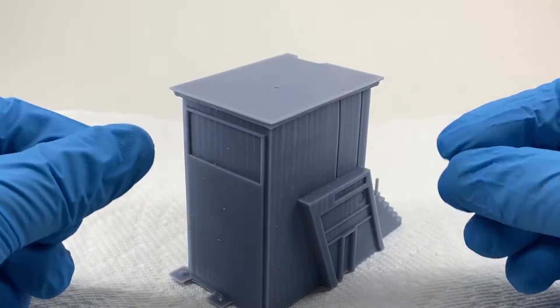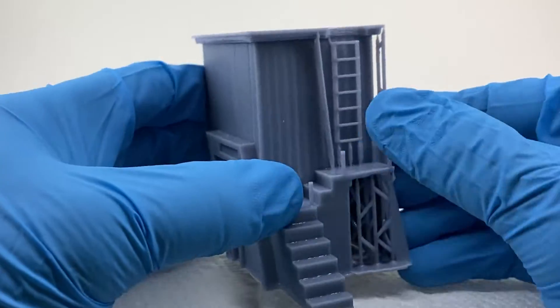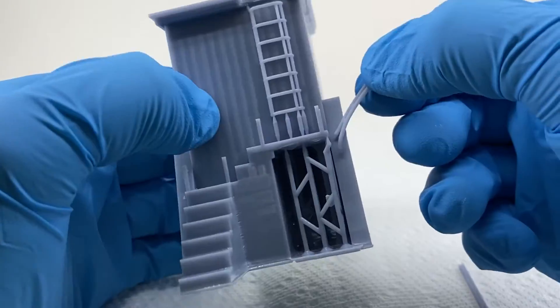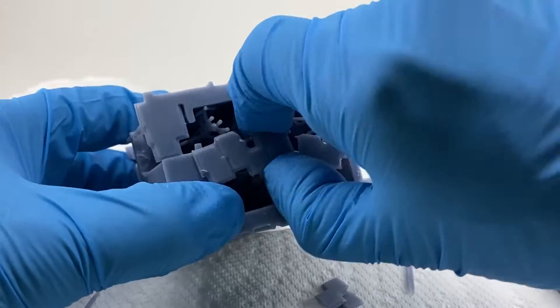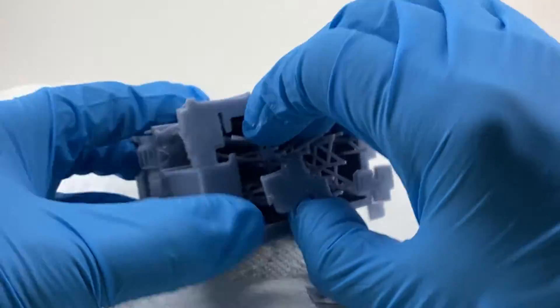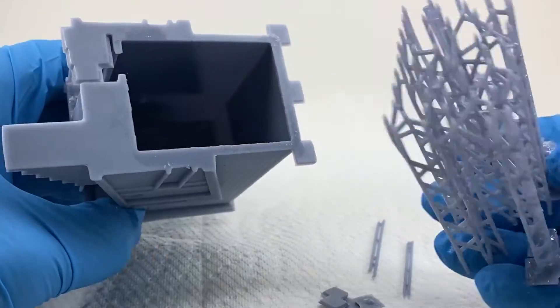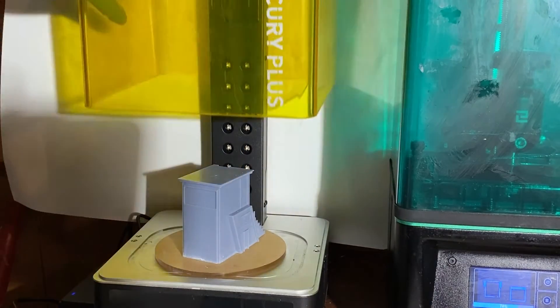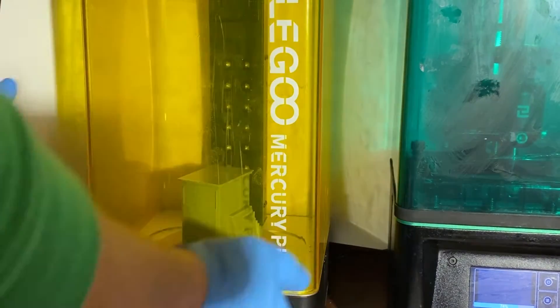Before I cure, I like to take the support structure off. It's much more pliable before it cures. When it cures, it's very rigid and snaps and goes all over the place. So I like to take it out before I cure in the UV light.